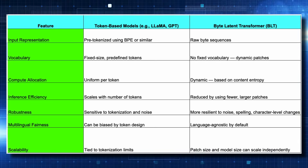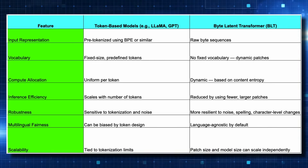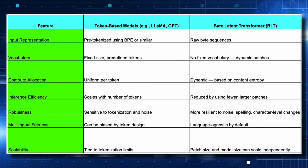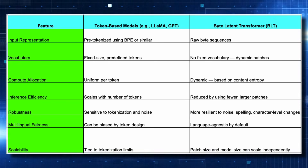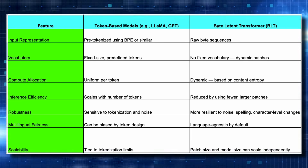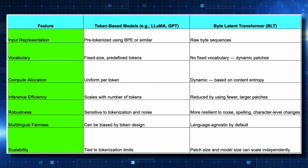In terms of compute allocation, token-based models allocate the same compute uniformly for every token. With BLT it is dynamic, based on content entropy. For inference efficiency, token-based models scale with the number of tokens — more tokens require more compute. BLT reduces this by using fewer but larger patches, which are groups of bytes.